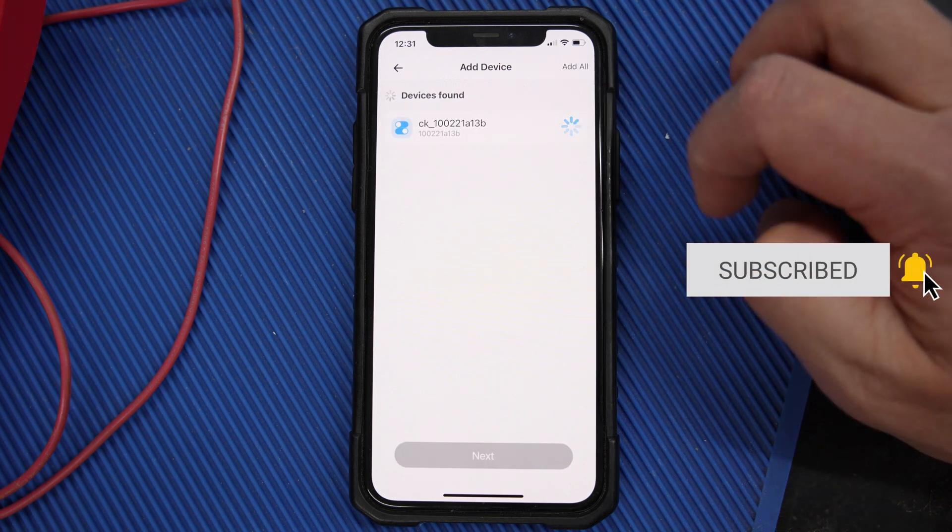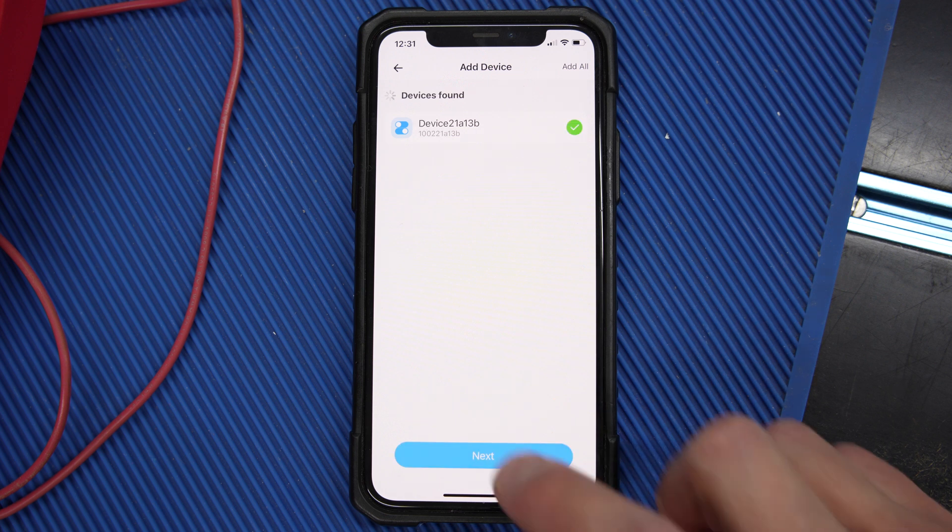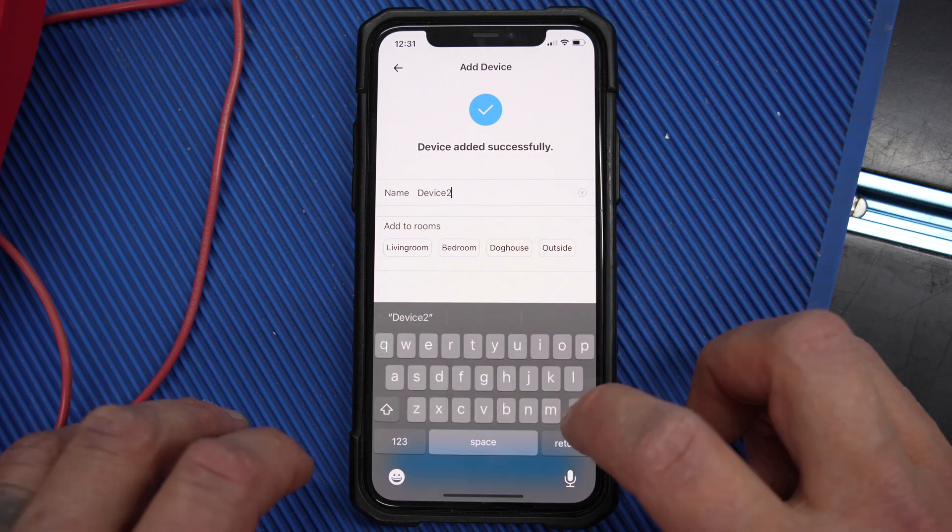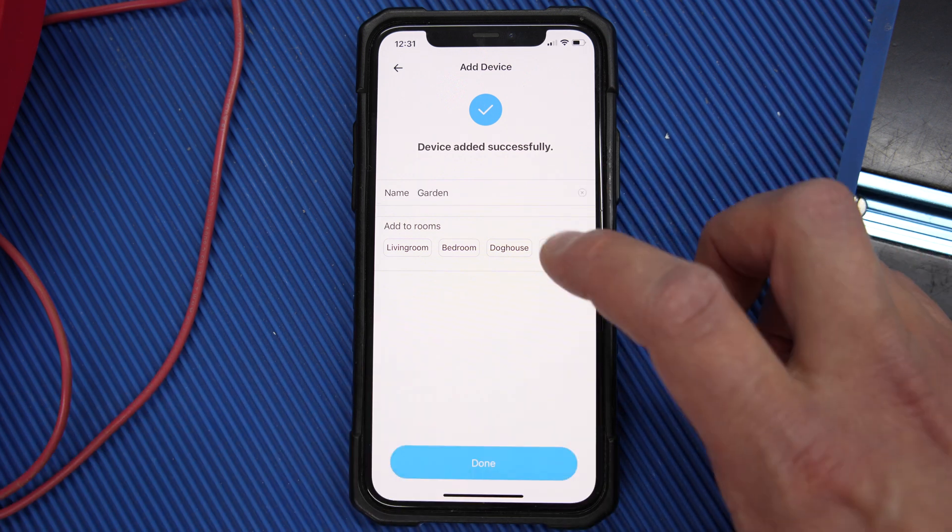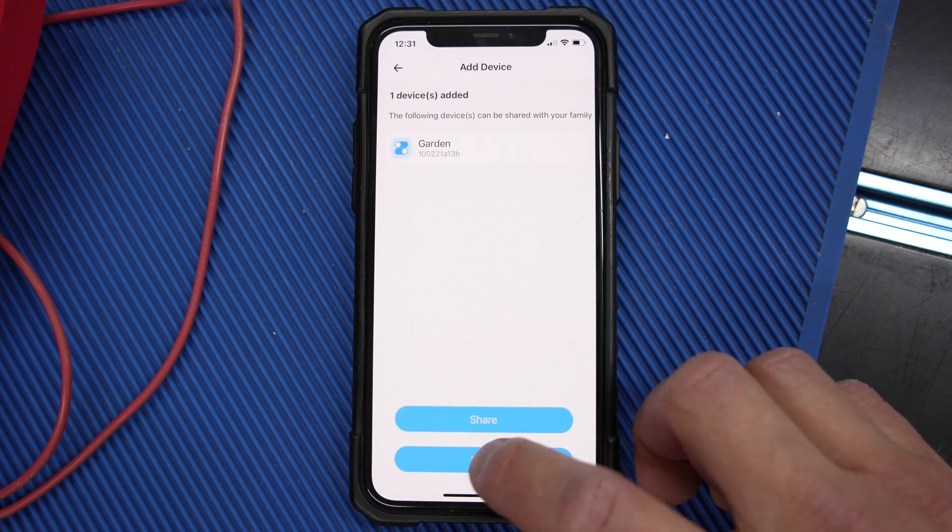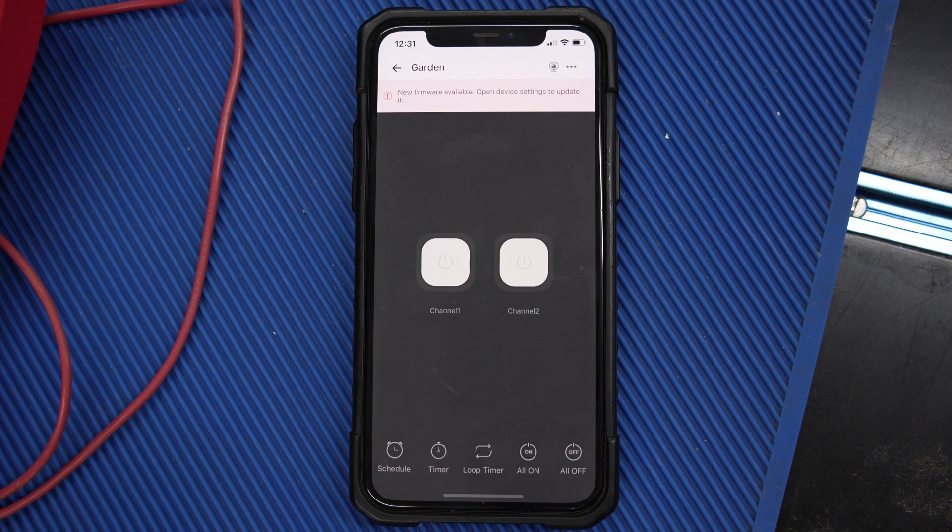Once found press the blue add button and when added press next. You can now change the name of your device and press next again and that's it you're done. Now just to test if it paired correctly.